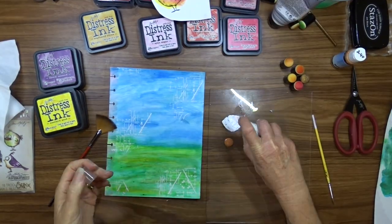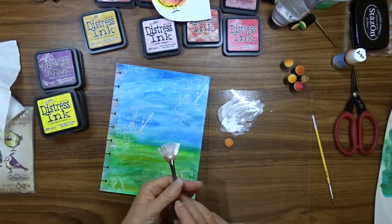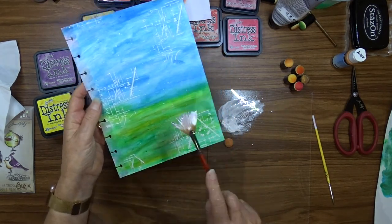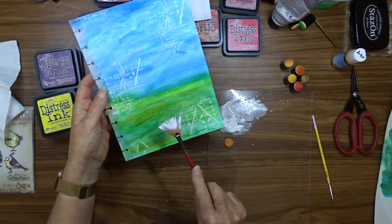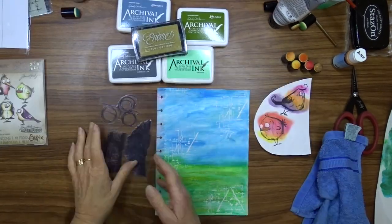While I've got the white acrylic paint out I take some water, water it down slightly and using my fan brush I splatter some white onto the background, just adding a little more white into the picture.